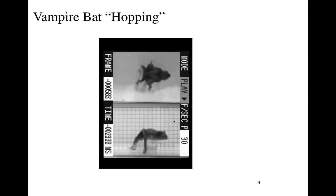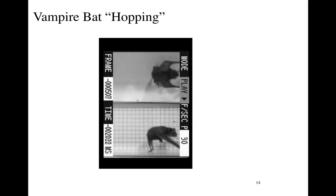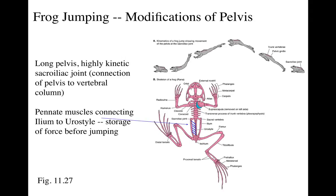This is the only hopping bat — it's a vampire bat, and this is a really freaky mode of locomotion. And then of course there's frog jumping, which is done with a really unusual pelvis — it's very long and highly kinetic. There's a highly kinetic sacroiliac joint, which means it can bend quite a lot, and there are pinnate muscles connecting the ileum to the urostyle. When those muscles contract they store force, which can then be released when the animal jumps.